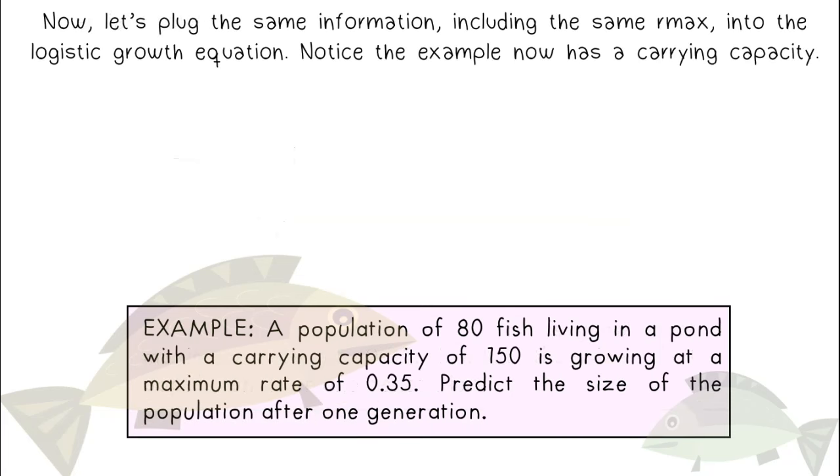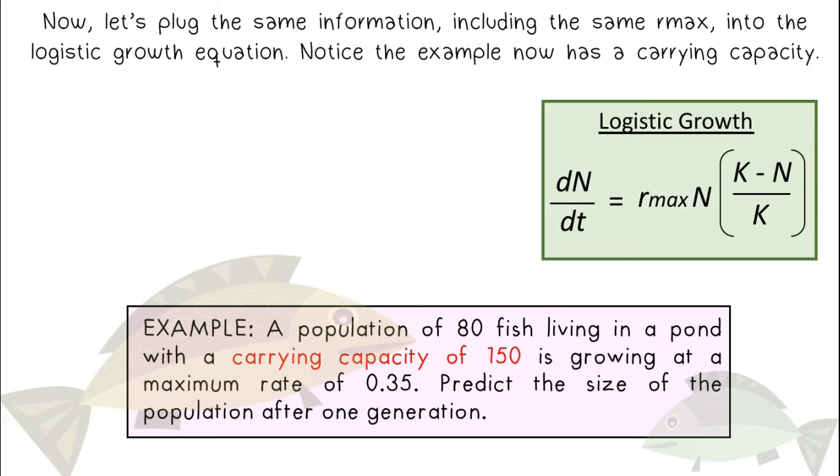Now let's plug the same information, including the same rmax, into the logistic growth equation. Notice the example now has a carrying capacity. In this example, dN over dt is now only 13 fish. And after one generation, we only expect there to be 93 fish.